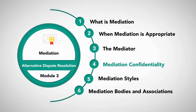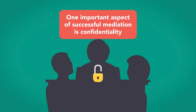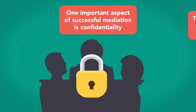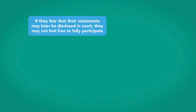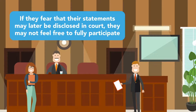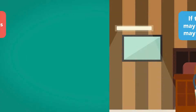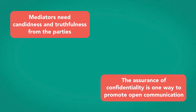Mediation Confidentiality. One important aspect of successful mediation is confidentiality. For mediation to work, the parties must feel confident that the information they share will be held in the strictest of confidence. Otherwise, if they fear their statements may later be disclosed in court, they may not feel free to fully participate in the proceedings. Mediators need candidness and truthfulness from the parties, and the assurance of confidentiality is one way to promote open communication.